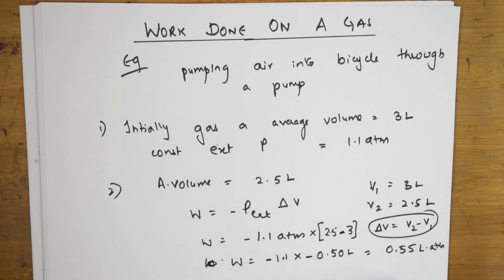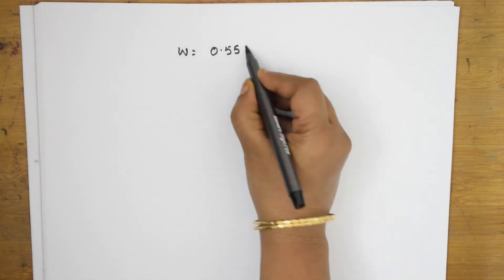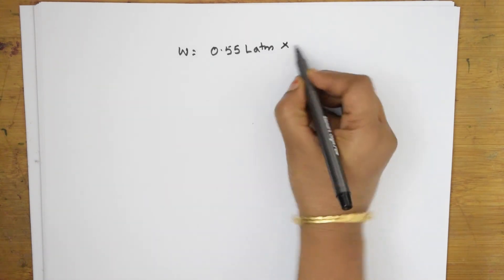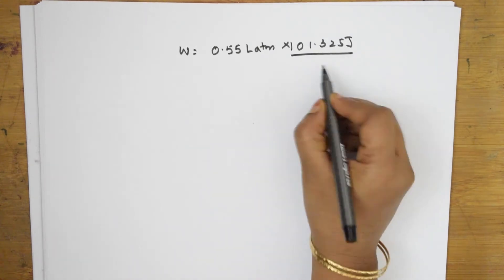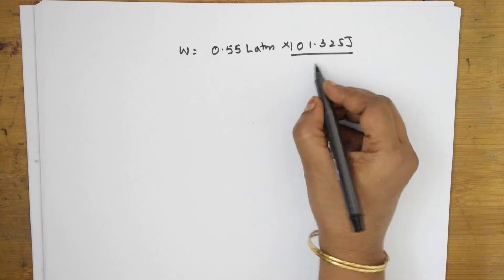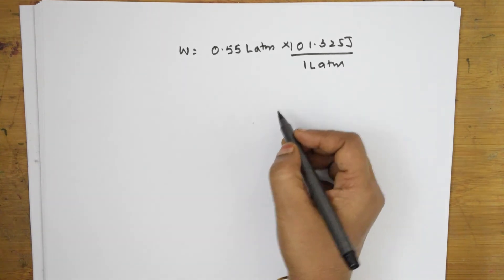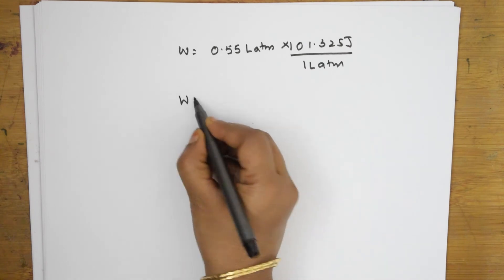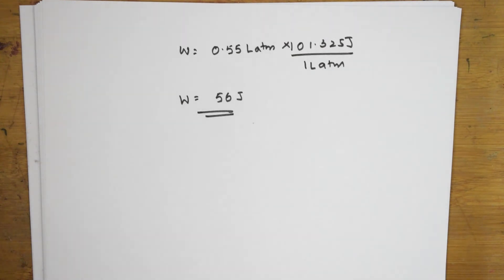Fine. So, further, I need to convert it into joules, isn't it? So, let us take this. W is equal to 0.55 liter atmosphere into conversion factor 101.325 to convert it into joules divided by 1 liter atmosphere. This gets cancelled. W, I get an answer of 56 joules. When I multiply this.